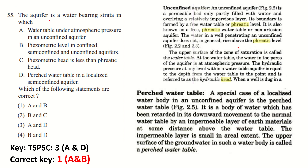The next one is Question 55, regarding water in an aquifer. Let us use the elimination process. The first option mentions a perched water table in a localized semi-confined aquifer. The perched water table is related to an unconfined aquifer, not semi-confined. Since the option states semi-confined, option D is not the answer. We can eliminate options A and D — that is, options 3 and 4. The remaining options are B and C.